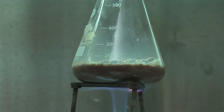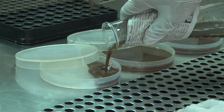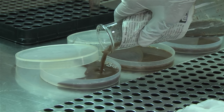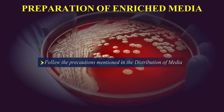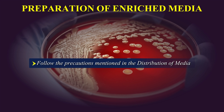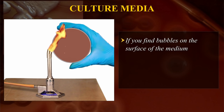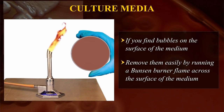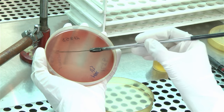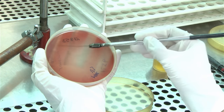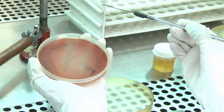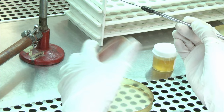After a homogeneous mixture is obtained, get ready for pouring into plates. Follow the precautions mentioned in the distribution of media section. Any bubbles on the surface should be removed by passing the flame of the Bunsen burner across the surface. After pouring the media into plates, leave them undisturbed till the agar is solidified. Then stack the plates, seal them in plastic bags, and store at 4 degrees centigrade.